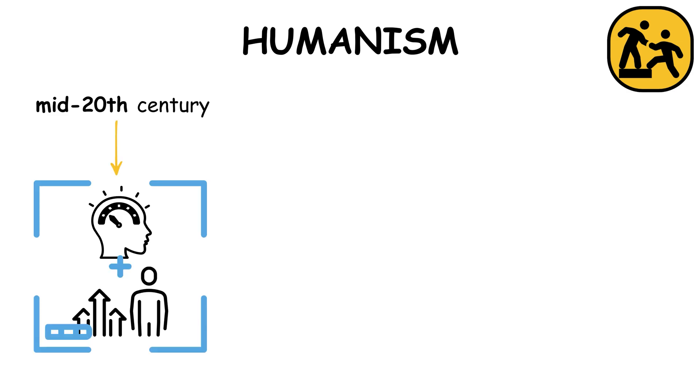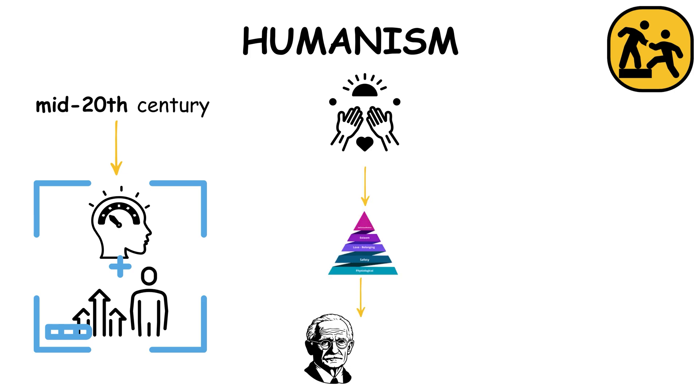Humanism, emerging in the mid-20th century, focuses on individual potential and personal growth. It argues for inherent goodness and self-actualization. Pioneered by Carl Rogers and Abraham Maslow, this approach counters deterministic views, emphasizing personal choice and psychological health.